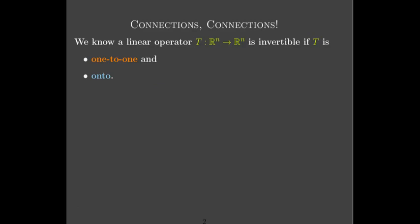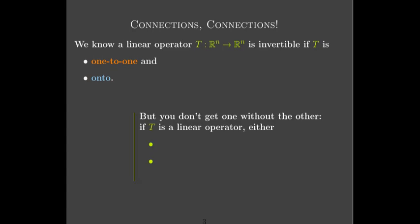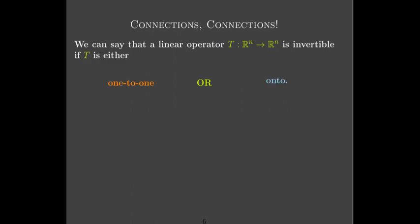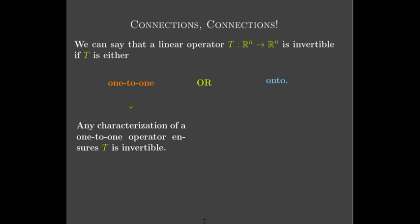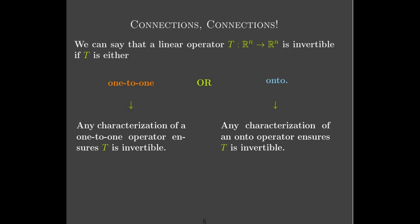We learn from the definition that a linear operator is invertible if it is both onto and one-to-one. But when you have an operator, you get both or neither. If you have a linear operator, it's either both one-to-one and onto, or it's neither one-to-one nor onto.